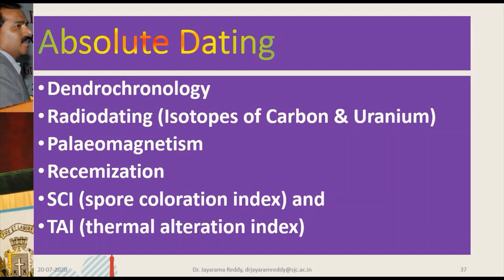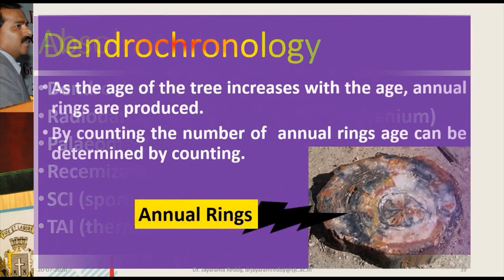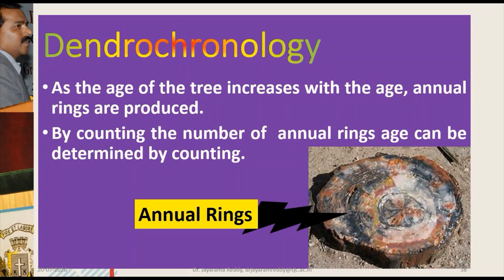As you can see on the right-hand side, there is a piece of petrified wood. You can see the annual rings, and by counting the number of annual rings you can estimate the age of the fossil.